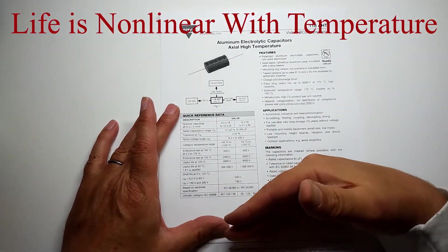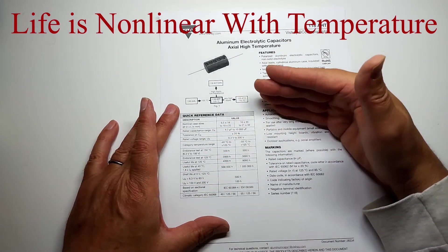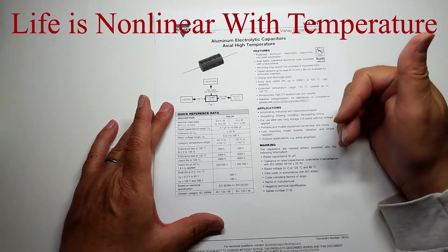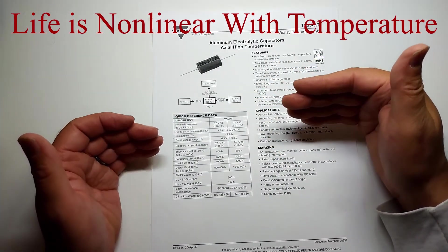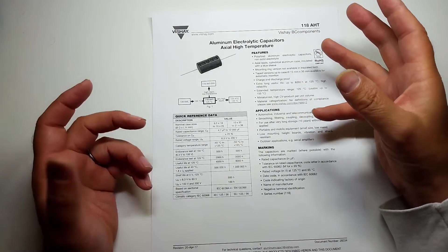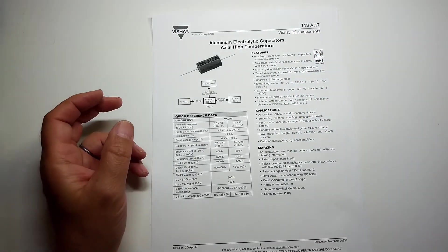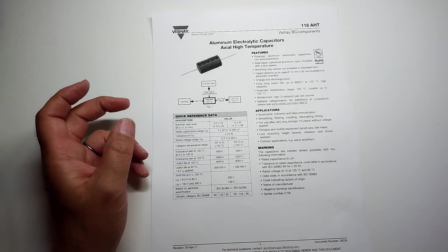But if you can drop the temperature to 40°C you get half a million hours, and it's kind of linear with temperature. So as the temperature goes up, your life will decrease. This is probably the most temperature-dependent device in a light bulb. These capacitors will fail first over any of the other parts.